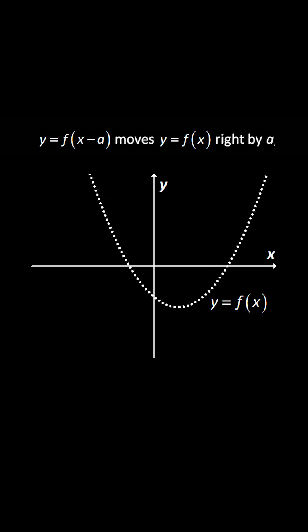Rule five is when we have y equals f(x) minus a. That graph moves y equals f(x) right by a. So rule six, if it's x plus a, then we move y equals f(x) left by a.